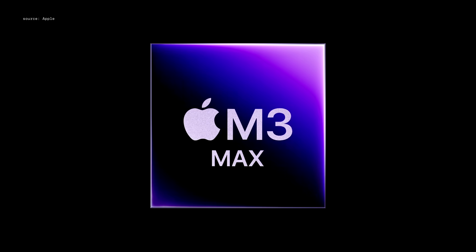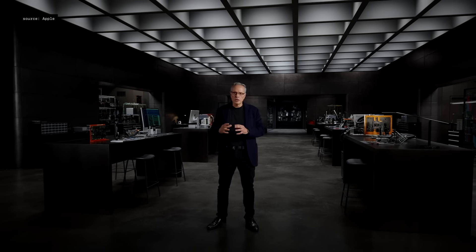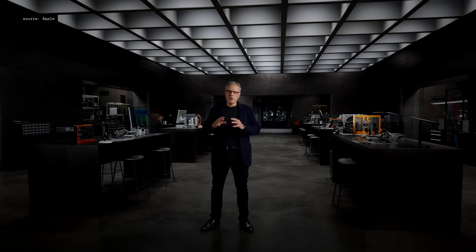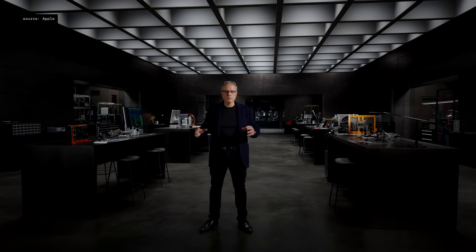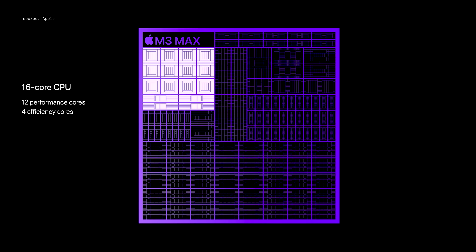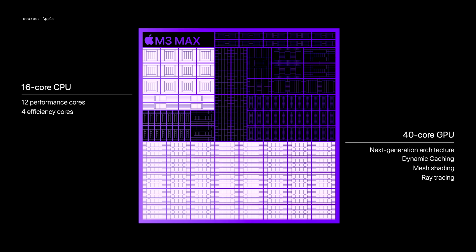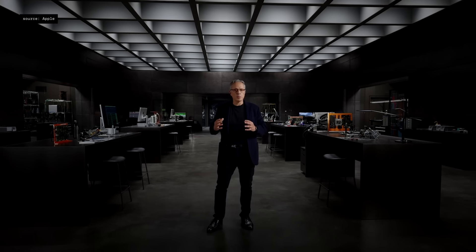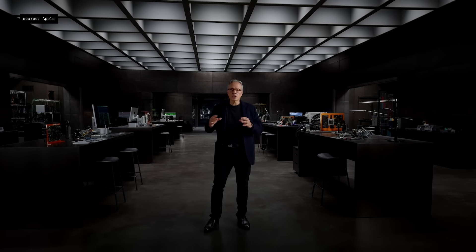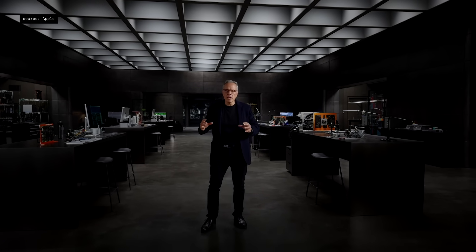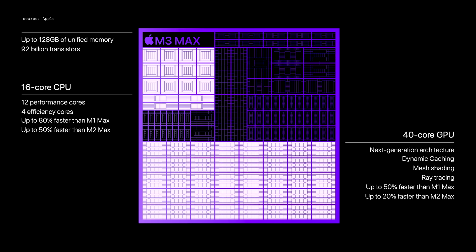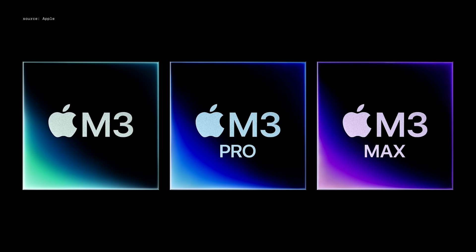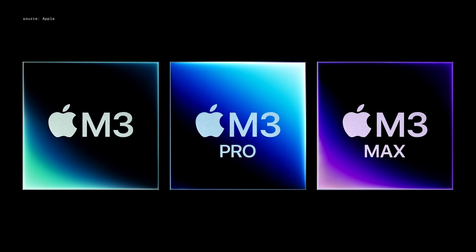And finally, M3 Max takes it even further to deliver a tremendous leap in performance for the most demanding Pro workloads. It features a 16-core CPU and a 40-core GPU, and it now supports up to a massive 128 GB of unified memory, enabling AI developers to work with even larger transformer models with billions of parameters. M3 Max is up to 80% faster than M1 Max.